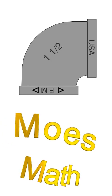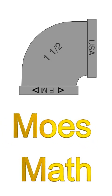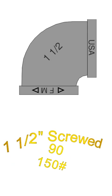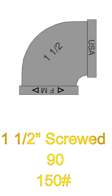How you doing today? Welcome to Mo's Math. Today we're going to discuss what an inch and a half screw 90 takes off. In this case it's 150 pound malleable iron.